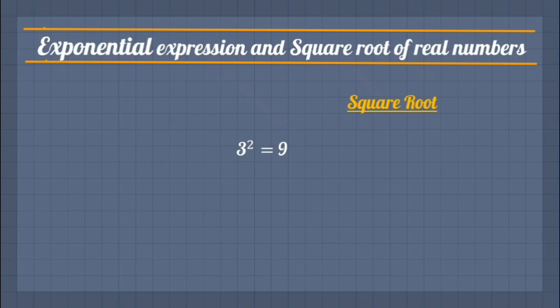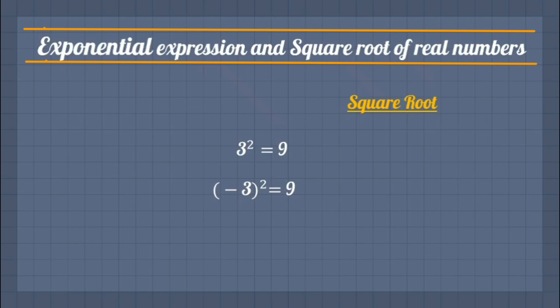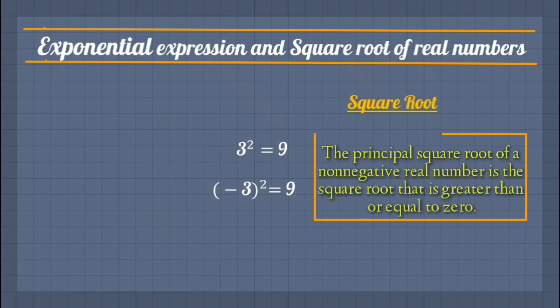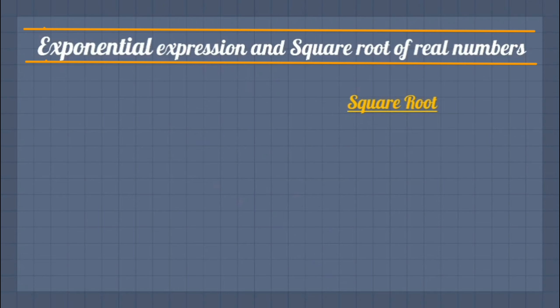As square of 3 equals to 9, however the square of minus 3 is also 9. For now we will focus on principal square root which is always taken to non-negative number and symbolically expressed like that.